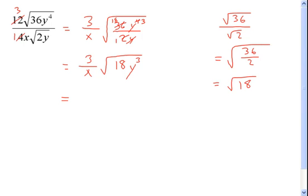So I have 3 over x, and then 3, and how many y's can I pull out? Group of 2, so it just becomes a 1, a y1.